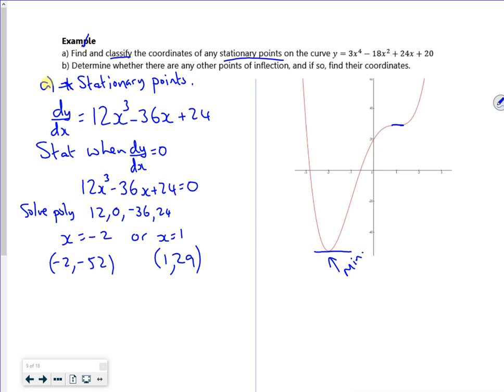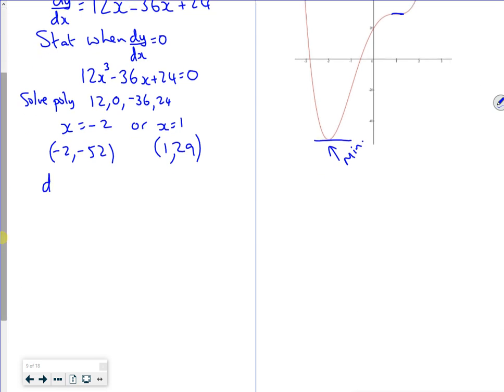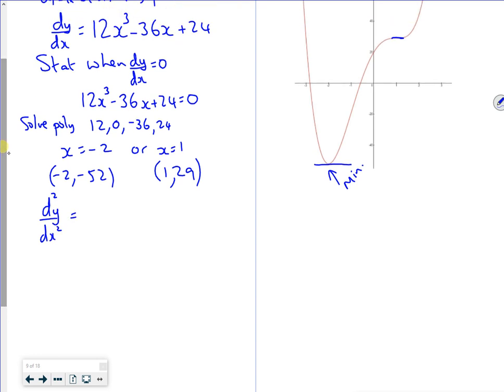Now I want to classify them. When you see 'classifying,' we're thinking 'determine the nature.' So I'm looking at d²y/dx². Differentiating again, we need to be careful here because we're looking at concave and convex while determining the nature. That gives me 36x² - 36.